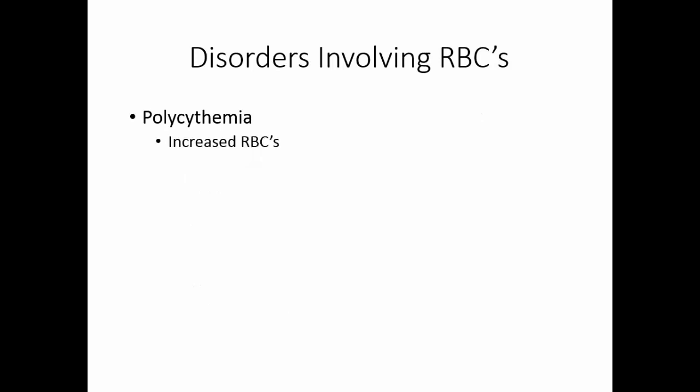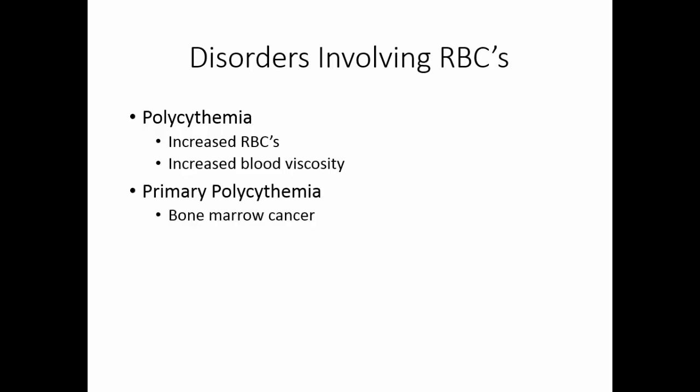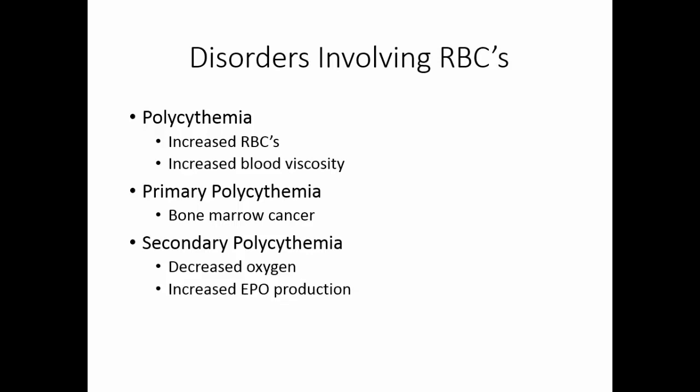Polycythemia is a condition where there are too many red blood cells. As a result, the blood is very viscous, leading to hypertension and sluggishness that can increase clotting. Primary polycythemia is the result of bone marrow cancer, so you have to treat the cancer. Secondary polycythemia is usually benign — it occurs when you find yourself in a decreased-oxygen atmosphere, causing increased erythropoietin production and more red blood cells.